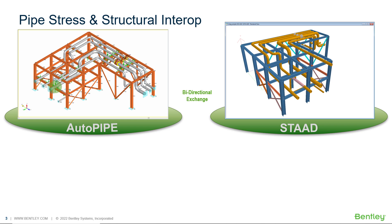The pipe stress engineer now has to rerun the pipe stress analysis, which now includes the flexibility of the structure, to make sure that we are still passing pipe stress criteria. If not, changes can be made and this can be an iterative process — but an automatic iterative process, getting rid of any manual transfer of data.